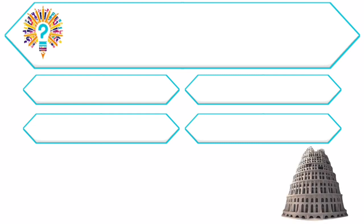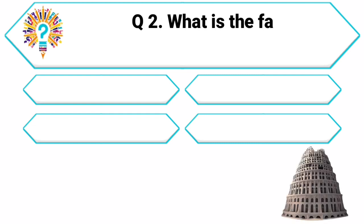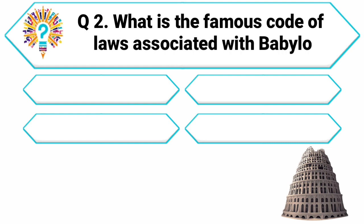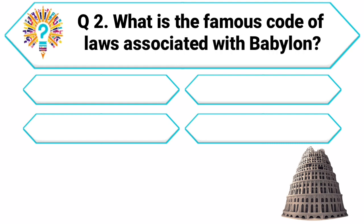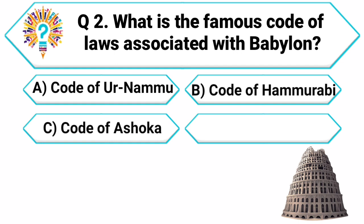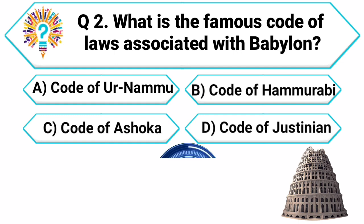Question 2. Next, we venture to the ancient city of Babylon. What is the famous code of laws associated with Babylon? Your options are: A. Code of Anammu, B. Code of Hammurabi, C. Code of Ashoka, D. Code of Justinian.